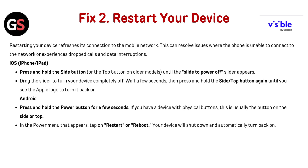Fix 2: Restart your device. Restarting your device refreshes its connection to the mobile network. This can resolve issues when the phone is unable to connect to the network or experiences dropped calls and data interruption.